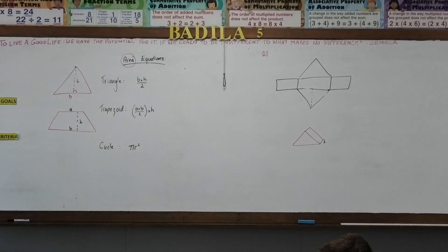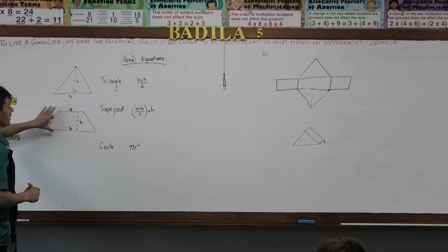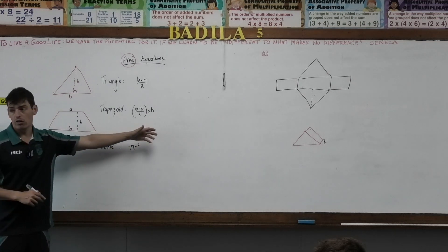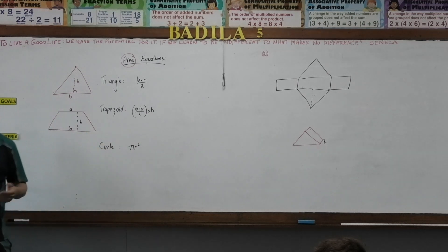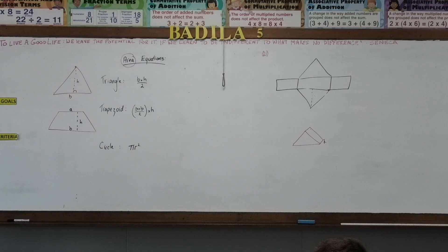What we're doing there is taking the average of our top and our bottom height, or top and our bottom length, and multiplying it by our height. Just like we would do with a rectangle, length times width.